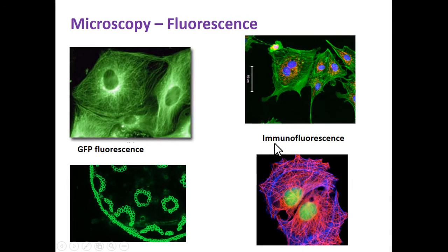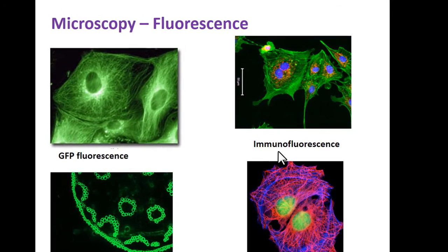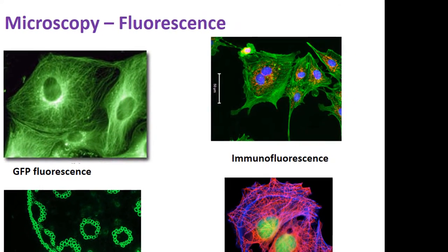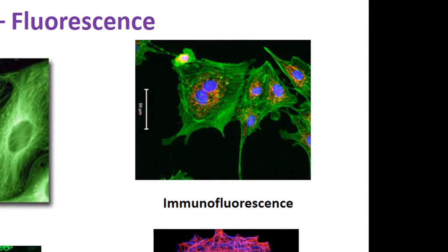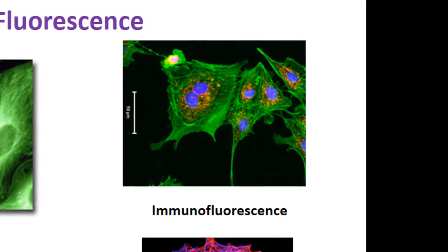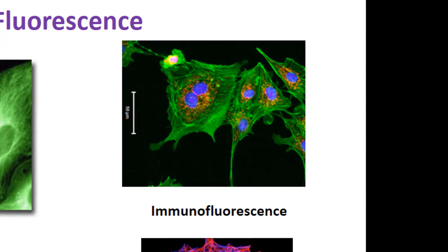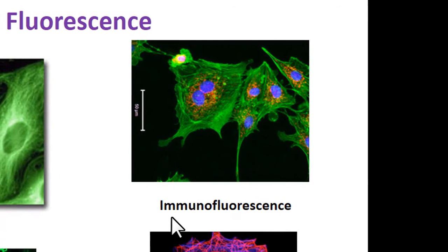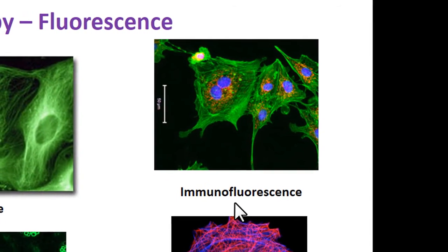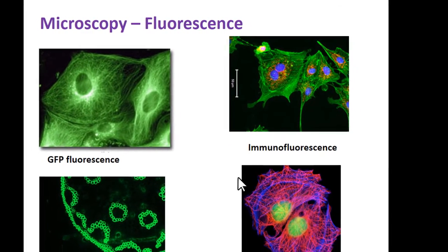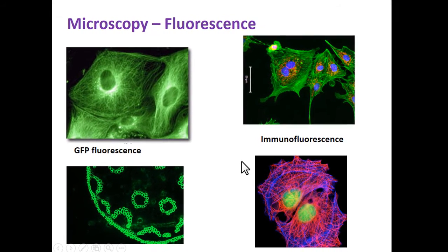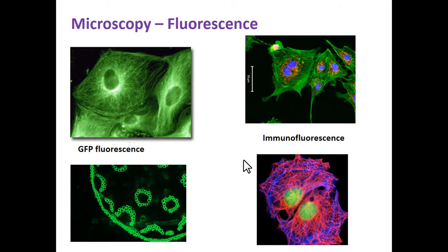But if you come over here to immunofluorescence — and immuno means we're using an antibody — you have these beautiful colors. These cells are fixed, they're dead. You have to fix them and treat them in order to get the antibody in there and the fluorescence probe. So immunofluorescence uses an antibody to specifically target certain proteins or structures in the cell. We can use multiple different antibodies with different fluorescent tags to have multiple colors showing different parts of a cell in one image. You'll read about this in your textbook.